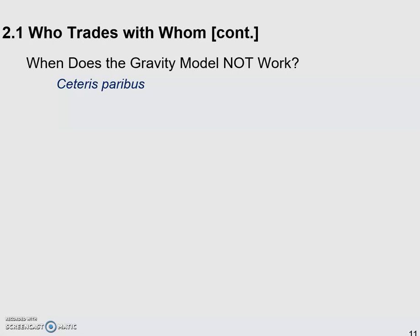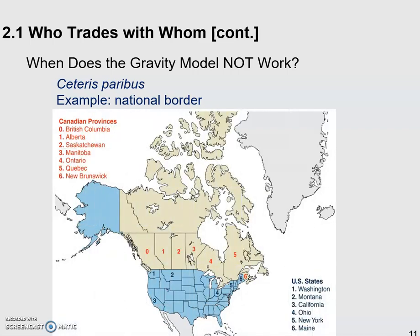The second case we're going to look at involves distance — specifically, under what circumstances the gravity model does not work properly. The factor we're going to focus on is the national border. We're going to look at the geographical distance between the Canadian provinces themselves and between these provinces and US states.